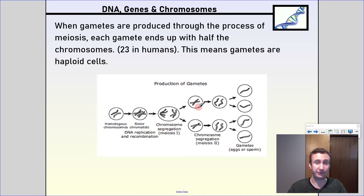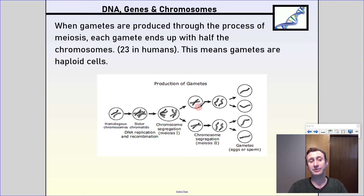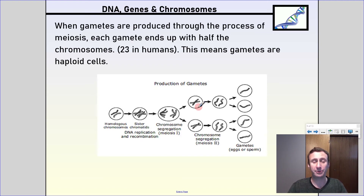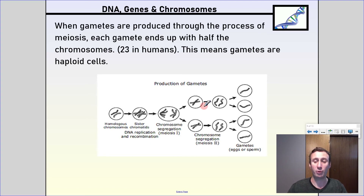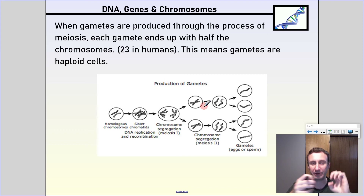When gametes are produced through the process of meiosis, we get haploid cells, which means they have half the genetic code of normal cells. Each gamete ends up with half the chromosomes — 23 in humans — which means gametes are haploid. And then when a sperm and an egg come together, now you've got 23 and 23, which comes together to make the full 46 that humans have.